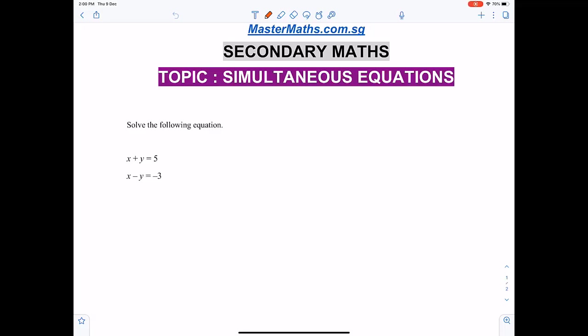We have a simultaneous equation problem. Solve the following equations: x plus y equals 5, this is our first equation. X minus y equals negative 3, this is our second equation.